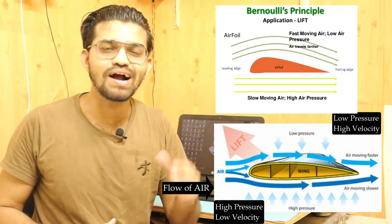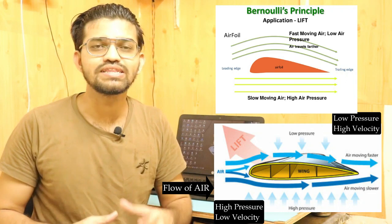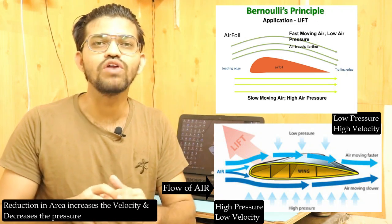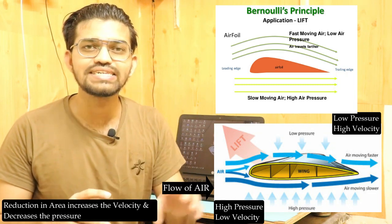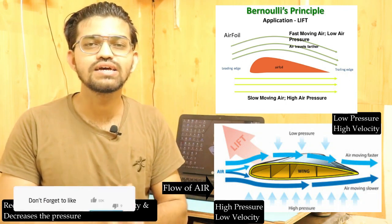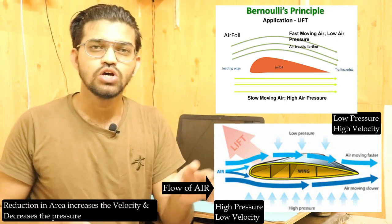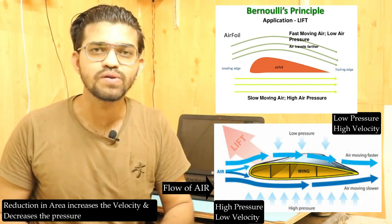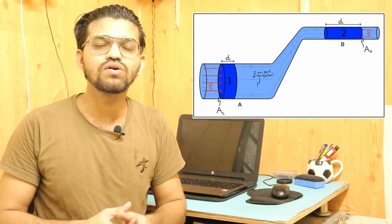The basic fundamental of Bernoulli's principle is that when the cross-sectional area gets reduced, the velocity of the fluid — the working media inside a particular chamber — will increase. That velocity increase results in a decrease of pressure. So as velocity increases, pressure reduces. This phenomenon is Bernoulli's principle.